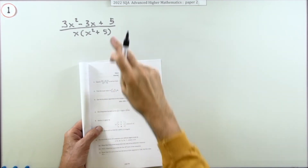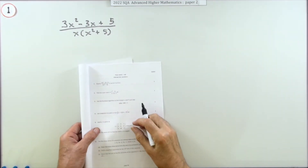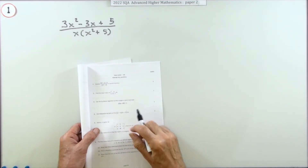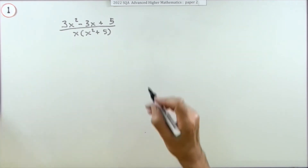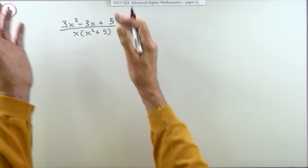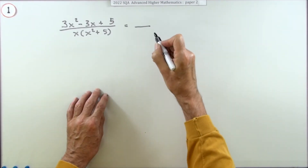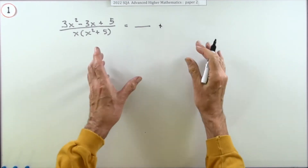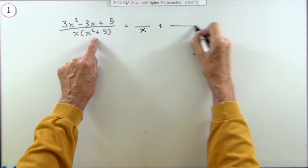Question one from Paper 2 of the 2022 Advanced Higher — three marks, partial fractions. Express this fraction in partial fractions. That just means instead of having this one big lump of a fraction, can you break it into smaller, more manageable fractions? Each of them has to be a proper fraction, and I could have one for each of the factors in the denominator.